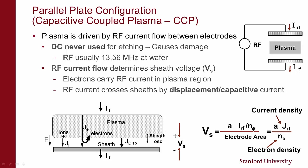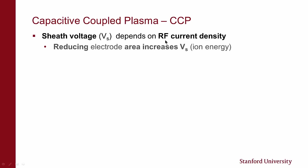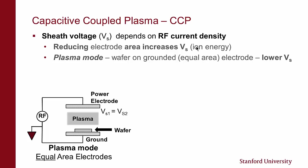Working out the details, the sheath voltage goes as the RF current density divided by the electron density. So a higher RF current density gives a higher sheath voltage. This is where electrode area comes into play — if I change the area of my electrode, I can increase my current density and increase my voltage. Reducing the electrode area increases the sheath voltage and therefore increases ion energy across the sheath. The capacitive coupling across the sheath — this displacement current or capacitive current — is where we get the name capacitive coupled plasma.